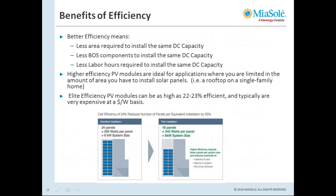Now that we understand efficiency, let's understand the implications. If you had the choice between a 23% efficient module and a 16% efficient module, which would you choose? On the surface, the 23% module looks very attractive, but better efficiency does not actually guarantee better performance. However, better efficiency does mean less area required for the same DC capacity, and less balance-of-system components to install the same DC capacity.